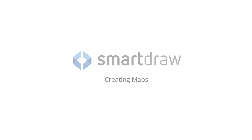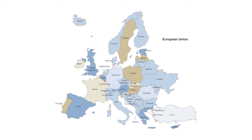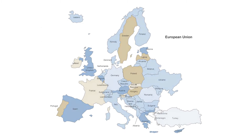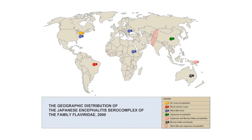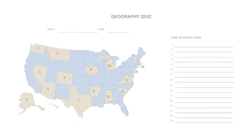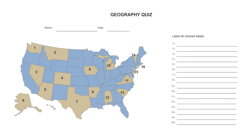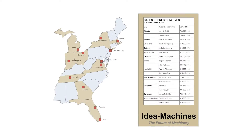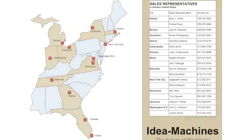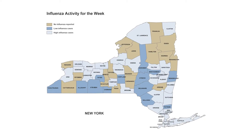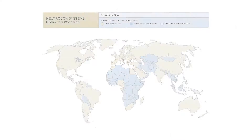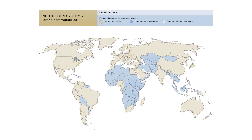SmartDraw offers all kinds of map outlines that you can add to and customize to your needs. You can use maps in presentations, educational materials, sales and marketing, public health, logistics management, and so much more.